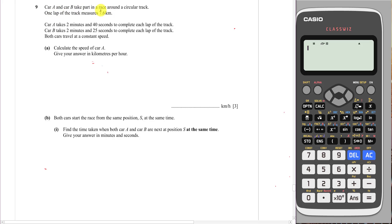This question says car A and car B will take part in a race around a circular track. One lap of the track measures 7.6 km. So you should imagine a circle, and one lap of it, the circumference of the circle, is 7.6 km.